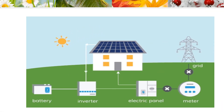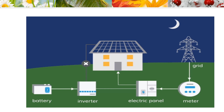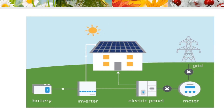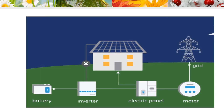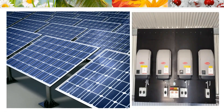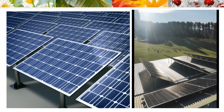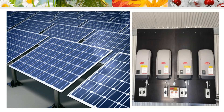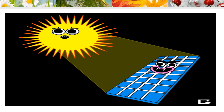Solar energy is also used for producing electricity. A device called a solar panel is used for this purpose. The solar panel has many solar cells. When the sunlight falls on the solar panel, the solar cells convert light energy into electricity. This electricity is called solar power.